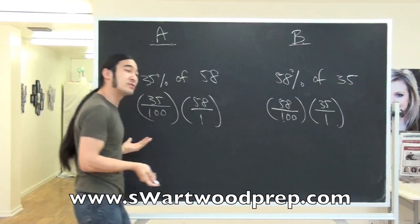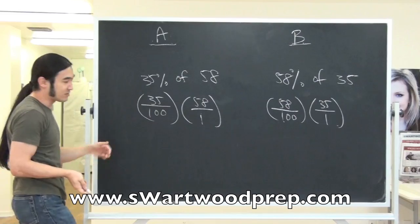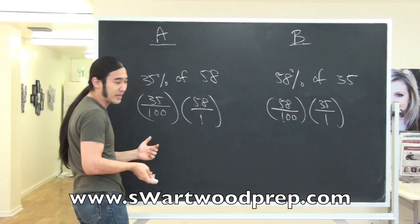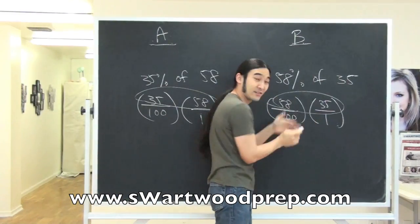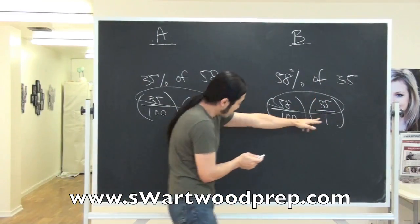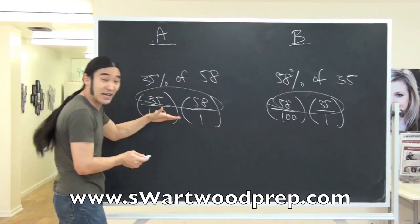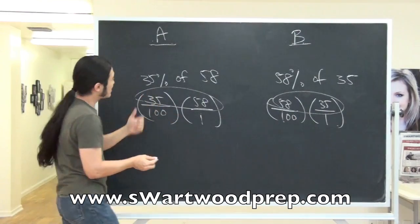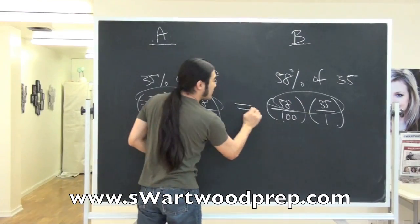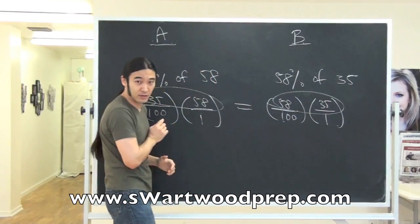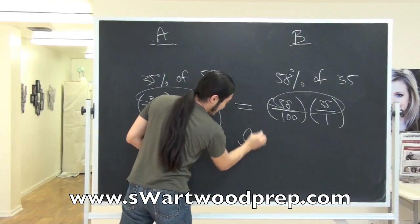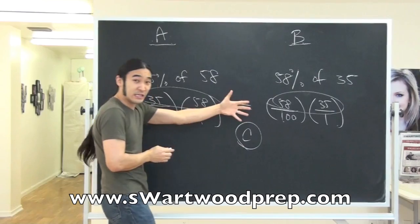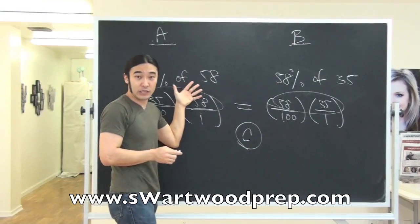Now the comparison is super easy, because if I play this fraction game, the tops of these fractions are exactly the same and the bottoms are exactly the same. So these guys have to be the same number. In this QC choice case, it would be C — both of them are equal.